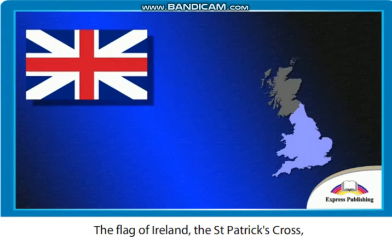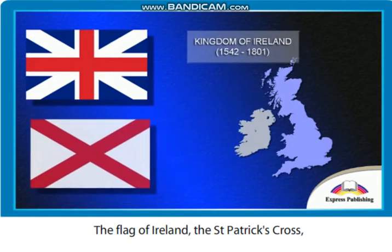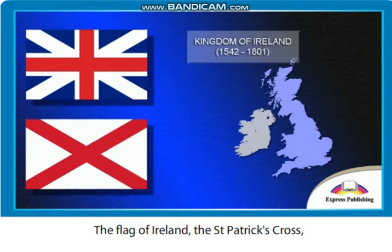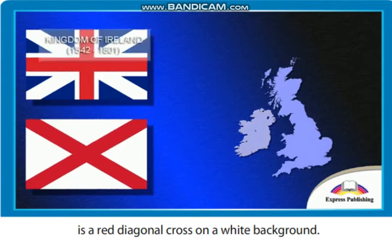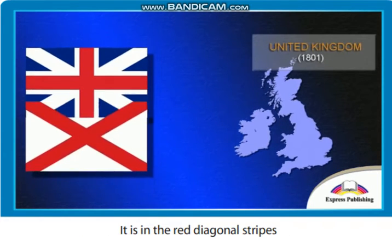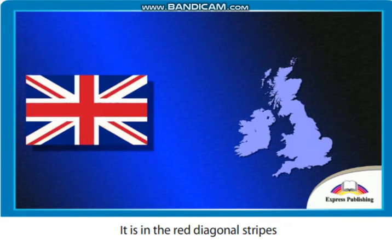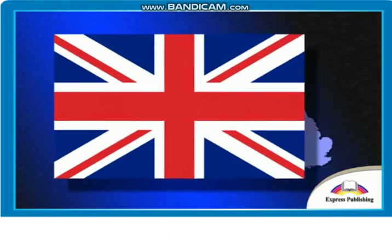The flag of Ireland, the St Patrick's Cross, is a red diagonal cross on a white background. It is in the red diagonal stripes on the Union Jack.